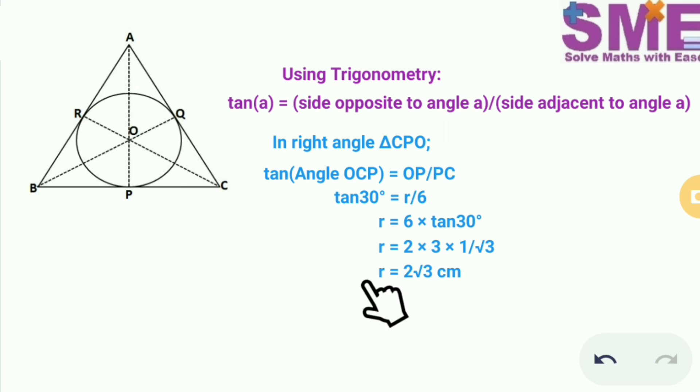We get the radius of the circle as 2 root 3 centimeter. So we have found the radius of the circle using trigonometry as well.